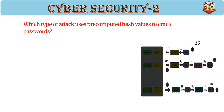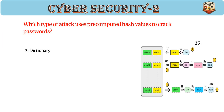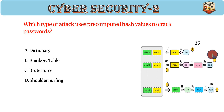Which type of attack uses pre-computed hash values to crack passwords? Answer: B. Rainbow table. Rainbow tables store pre-computed hashes. Speeds up password cracking. Mitigated by salting passwords.